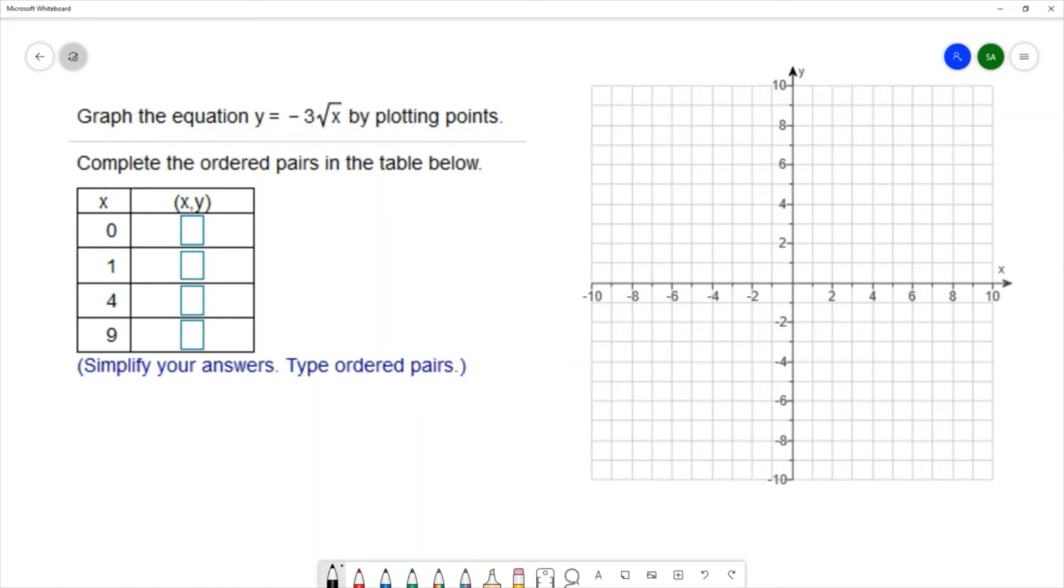So if we substitute a 0 into our equation, we would have y equals negative 3 square root of 0. The square root of 0 is 0, and negative 3 times 0 is 0. So our first ordered pair is the ordered pair 0, 0. We'll do the same thing with the remaining ordered pairs. The next one is an x value of 0, that gives negative 3 square root of 1. The square root of 1 is 1, and negative 3 times 1 is negative 3. So our next ordered pair is 1, negative 3.